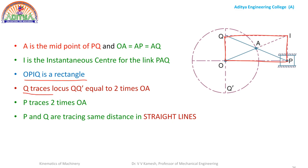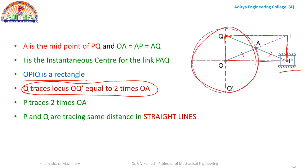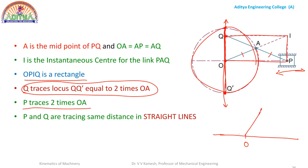Now, what is the tracing behavior of the extension point Q? Whenever link lengths OA and AP are constant and rotation is given to OA, the slider moves horizontally. The slider traces up to a point, and Q oscillates in the vertical direction. Q traces to its uppermost point and Q-dash at the lowest point. P also traces a distance of 2 times OA.